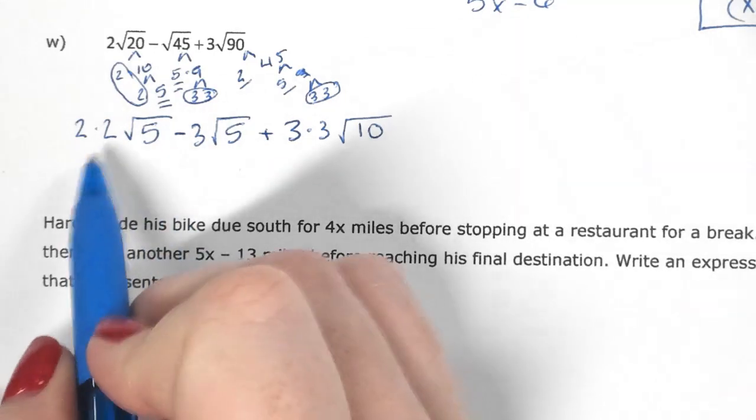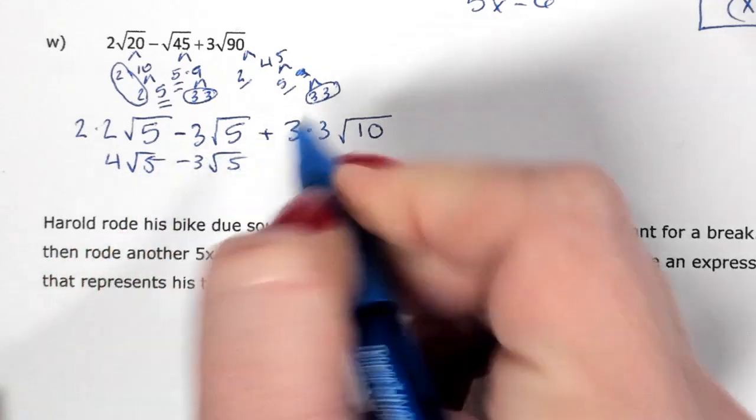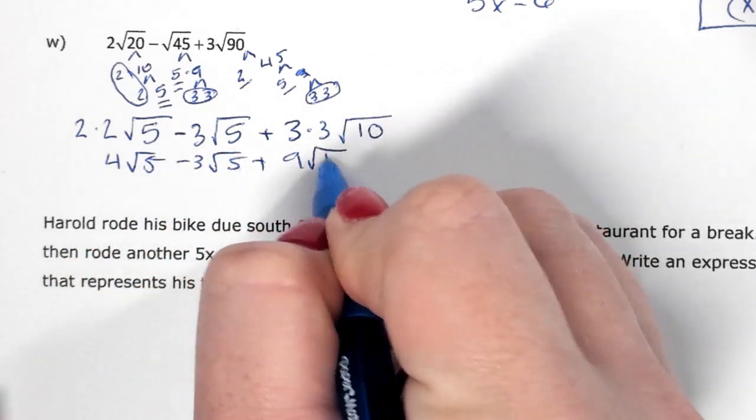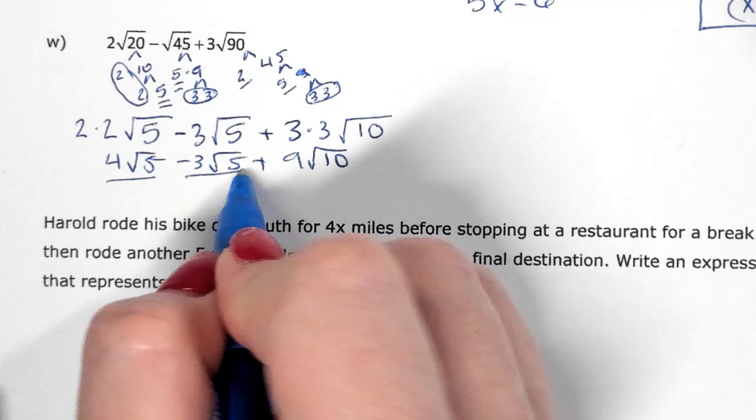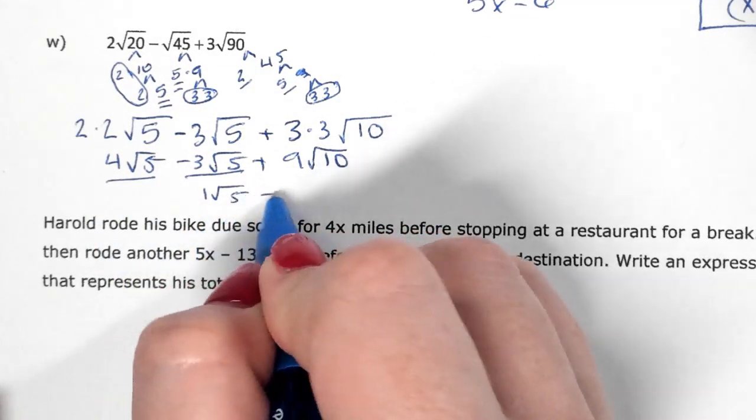So knowing that, here's 4√5 minus 3√5 plus 9√10, and the only thing I can combine are my like terms. So we have 1√5 plus 9√10.